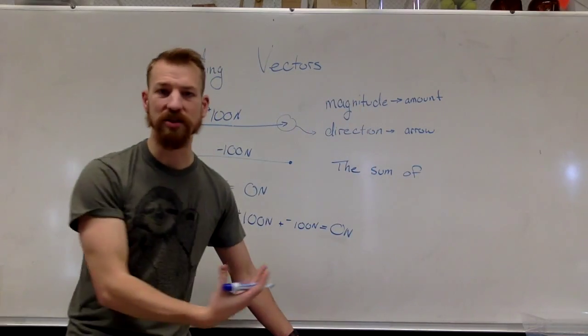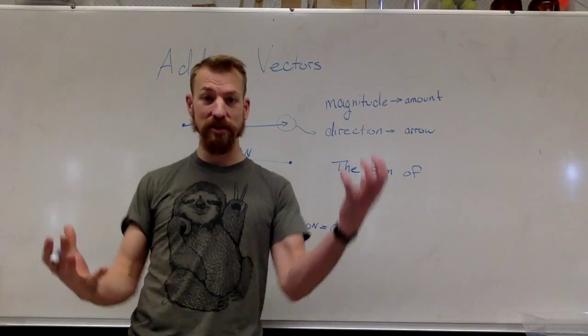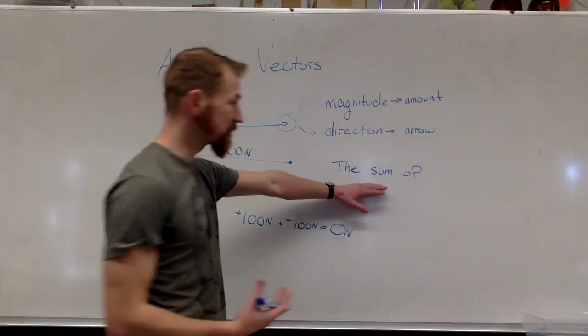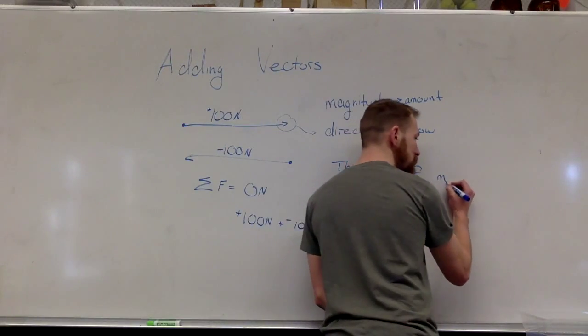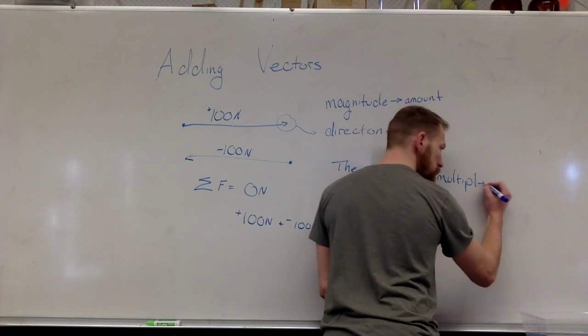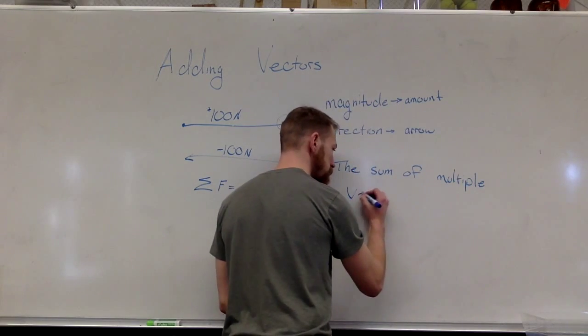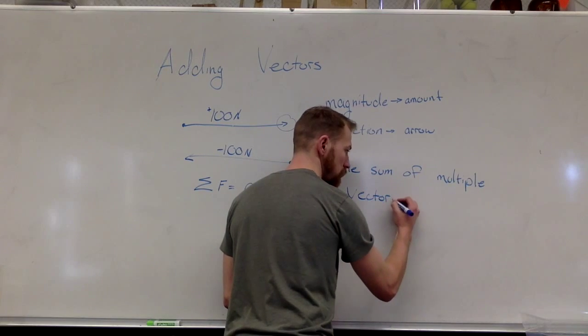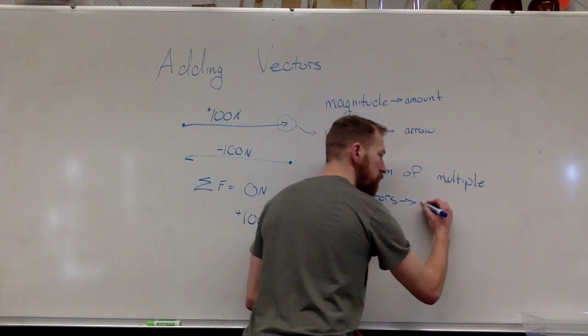so the sum of, actually we can add more than two vectors, we can add as many vectors together as we want. So the sum of multiple vectors, we call the resultant.